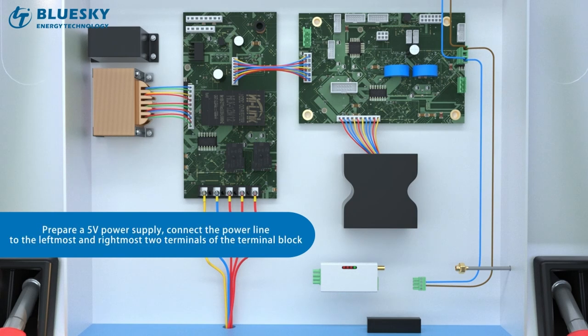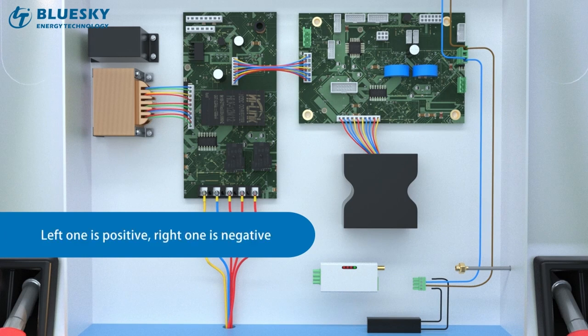Prepare a 5M power supply. Connect the power line to the leftmost and rightmost two terminals of the terminal block. The left one is positive and the right one is negative.